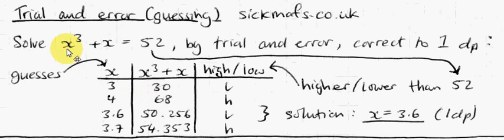So obviously, the value of x we're looking for is somewhere between 3 and 4, because 3 gives you an answer too low, and 4 gives you an answer that's too high.